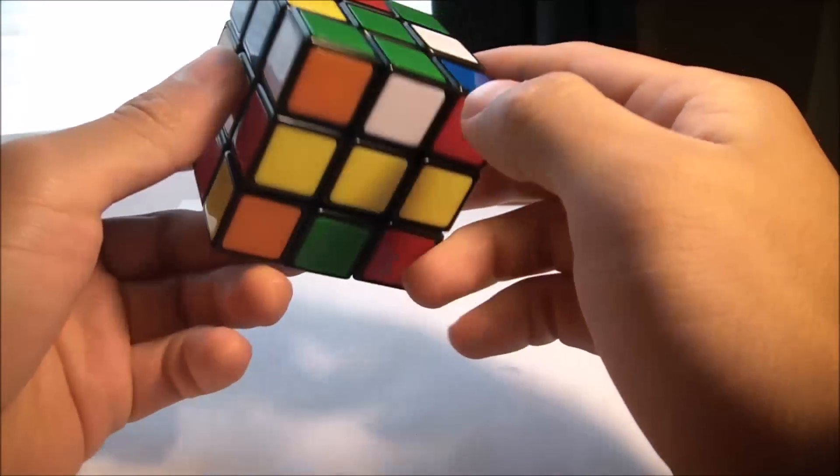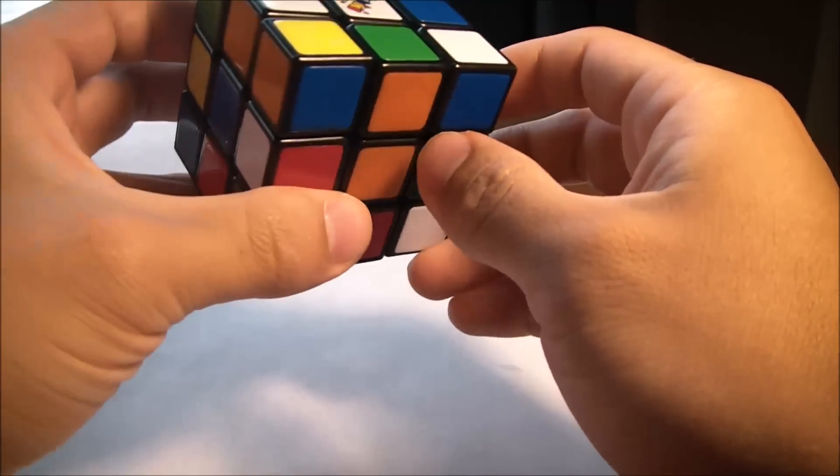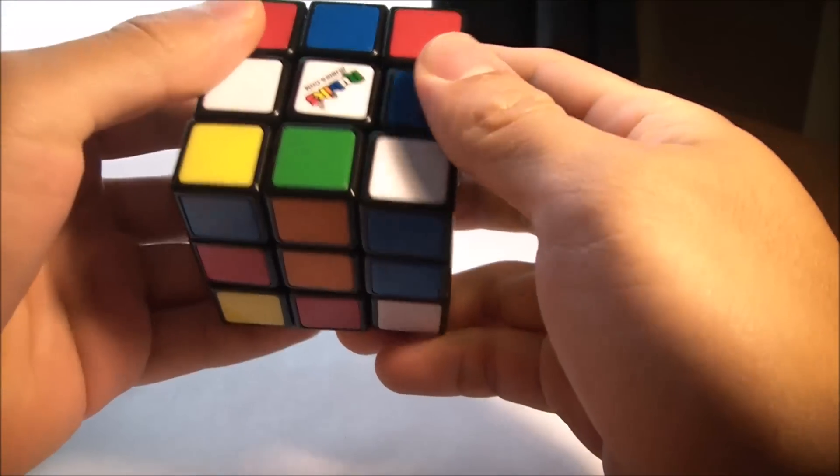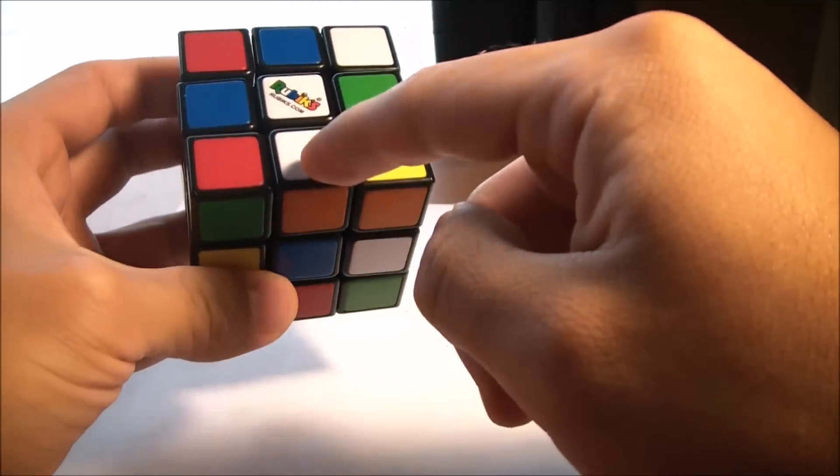To get things started, you need to understand what the Rubik's Cube is made of. It's made of three pieces or parts that make up the Rubik's Cube. This is called the edge piece.